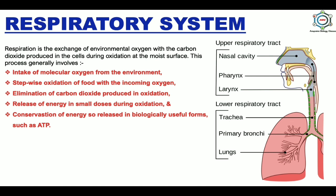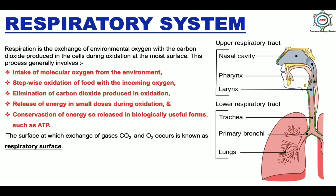The human respiratory system is a series of organs responsible for taking in O2 and expelling CO2. You can see the picture here. The respiratory system in human beings is divided into two parts: the upper respiratory tract, in which nasal cavity, pharynx, and larynx are present, and the lower respiratory tract, in which trachea, bronchi, and lungs are present. Lungs are the primary respiratory organ because they contain alveoli, which help in gaseous exchange. The surface at which exchange of gases occurs is known as the respiratory surface.